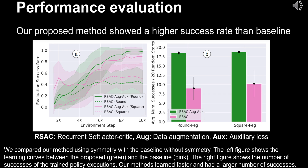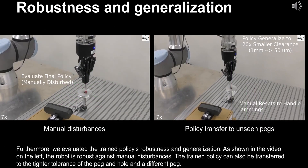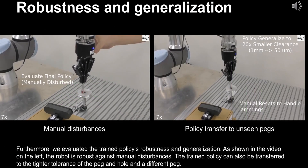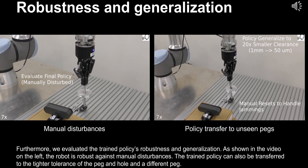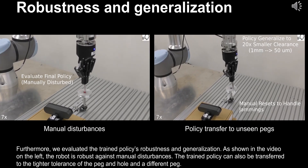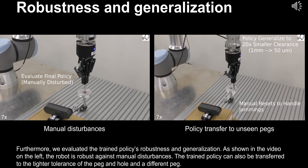Furthermore, we evaluated the trained policy's robustness and generalization. As shown in the video on the left, the robot is robust against manual disturbances. The trained policy can also be transferred to the tighter tolerance of the peg and hole in a different peg.